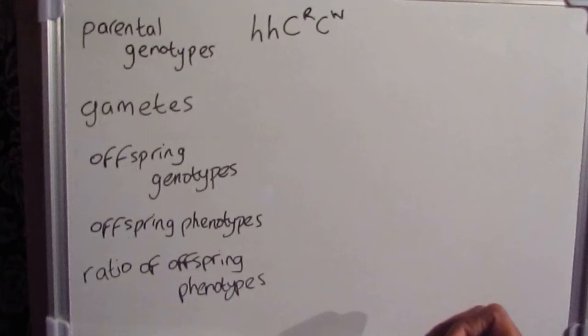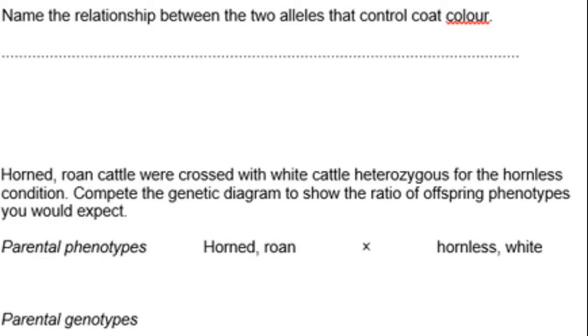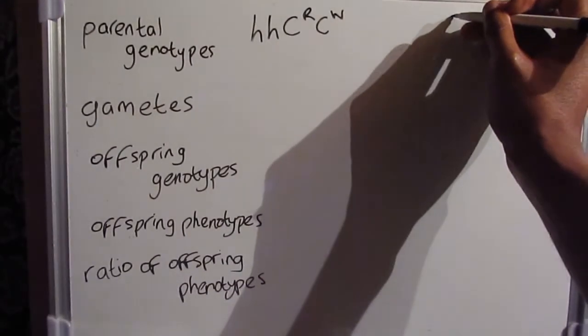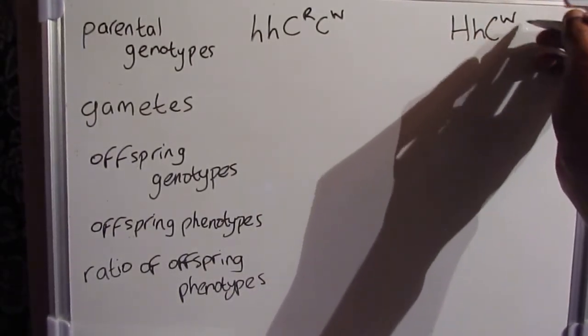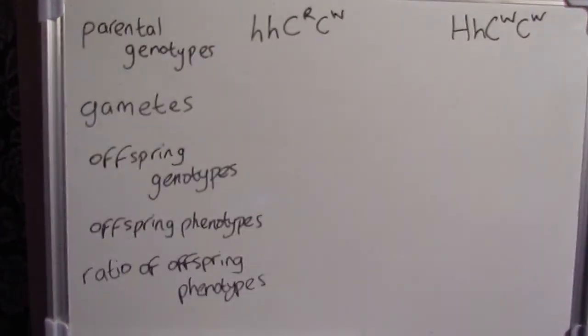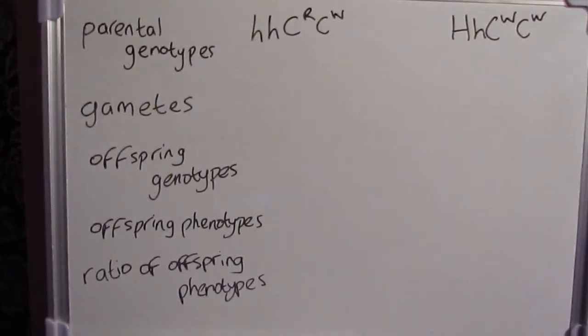For the hornless white, for hornless, because it's capital H, we need at least one of those. So how do we know now whether it's going to be homozygous dominant or heterozygous? If we look at the information just above question C, it does say horned roan cattle were crossed with white cattle heterozygous for the hornless condition. So that means it should be capital H, lowercase h. Where it's asking us now for the white, what we need to put then must be C superscript W, C superscript W.